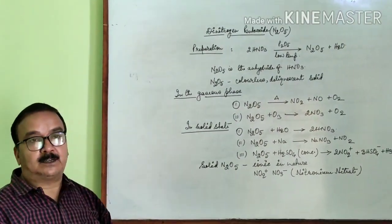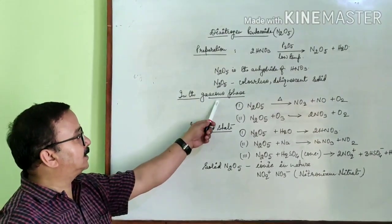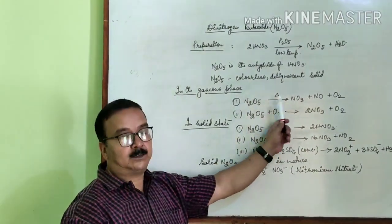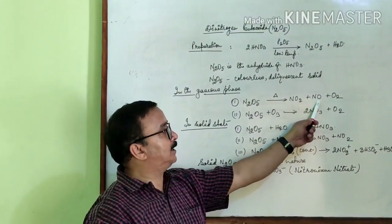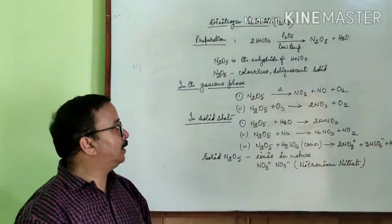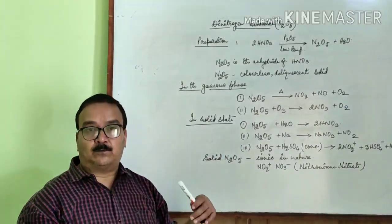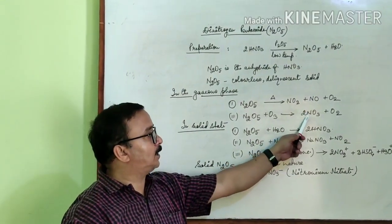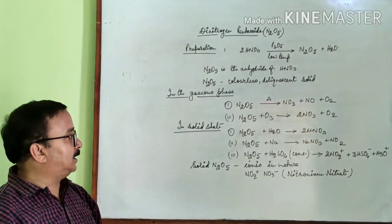Now what are the important reactions of N2O5? In the gaseous phase, N2O5 when heated undergoes decomposition and forms NO2 + NO + O2. Second one is N2O5 when reacts with ozone forms 2NO3 + O2.